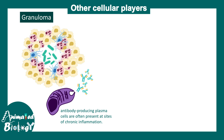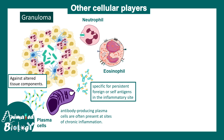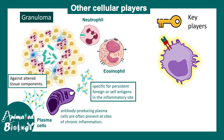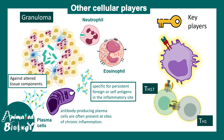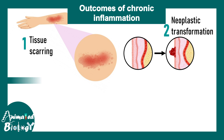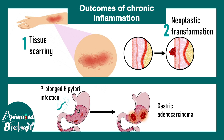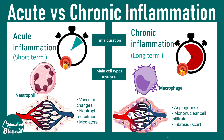Alongside M1 macrophages, plasma cells can secrete antibodies against pathogens or even altered tissue components. Neutrophils and eosinophils are also found at the site of infection but play a minor role compared to macrophages and Th1/Th17 cells. The outcomes of chronic inflammation are quite detrimental — there could be tissue scarring and neoplastic transformation. For example, untreated H. pylori infection with prolonged inflammation might lead to gastric adenocarcinoma.